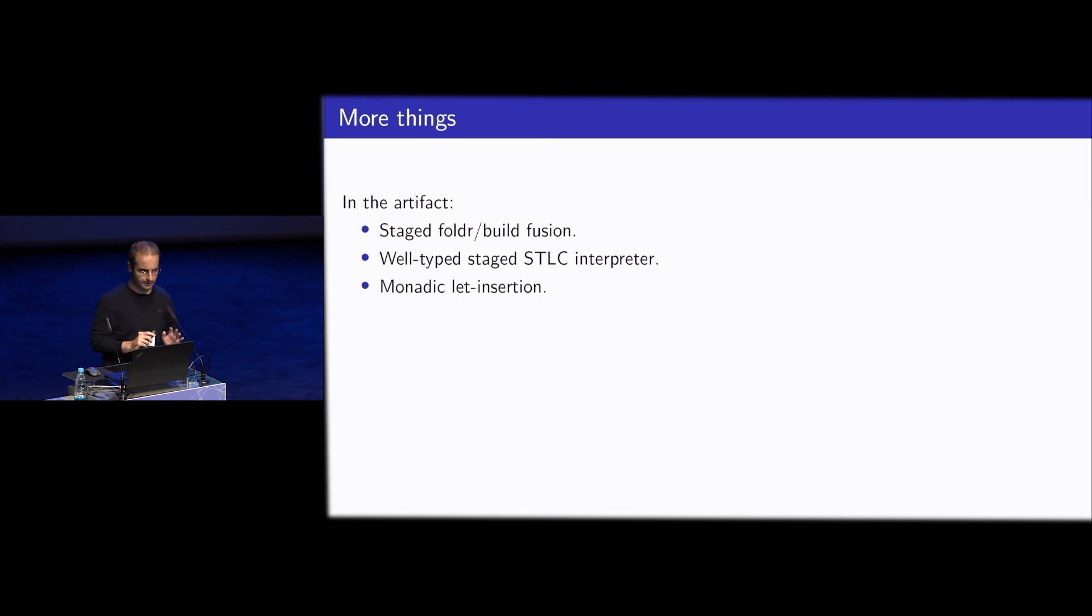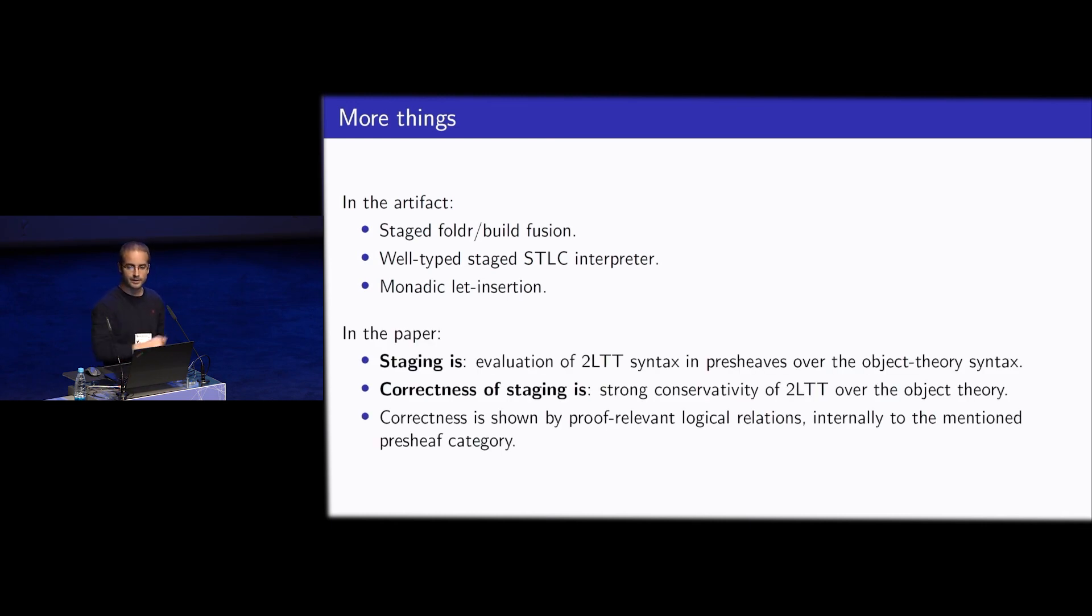And so there are more things. In the artifact, there is also an implementation of staged folder build fusion and a well-typed staged STLC interpreter and also a demonstration of monadic let insertion. And in the paper, there's the formal stuff. In the paper staging is evaluation of two-level type theory into presheaves over the object theory syntax. And correctness of staging is a conservativity property and the correctness is shown by proof-relevant logical relations internally to these presheaves over the object-level syntactic category. Thank you.